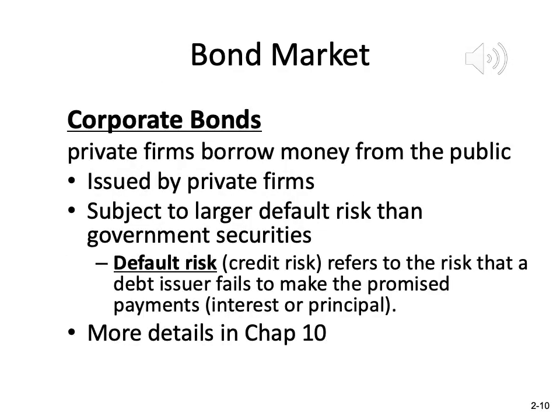Corporate bonds are issued by private companies to borrow money from the general public. Because they are issued by private companies, they have a higher default risk than government securities. We will have more detailed discussion in Chapter 10.